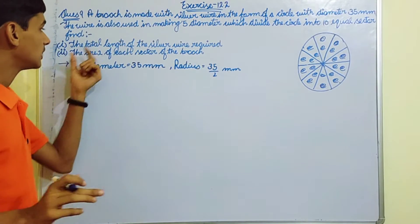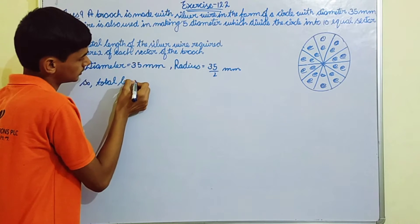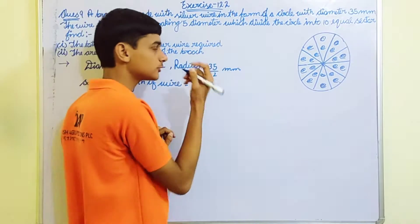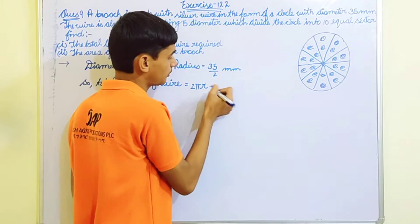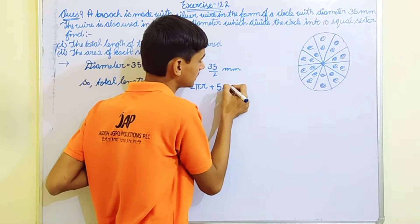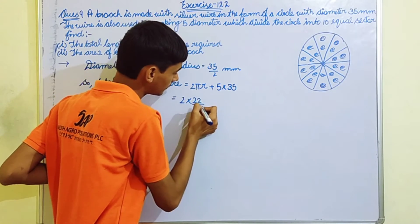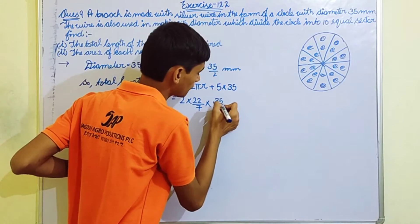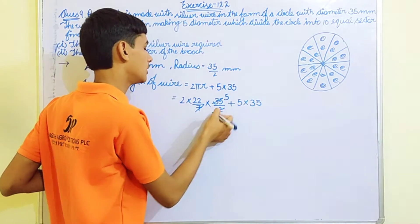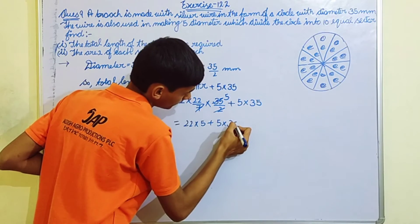Total length of wire is equals to circumference 2πr plus 5 diameters. So 2 times 22 by 7 times radius, which is 35 by 2, plus 5 times 35. After canceling 7 and 35, we get 22 times 5 plus 5 times 35.